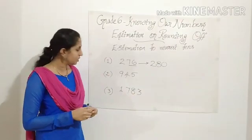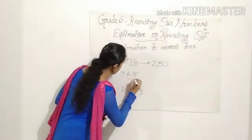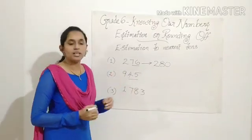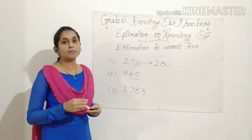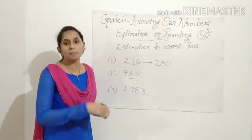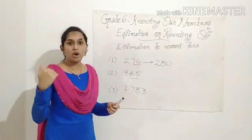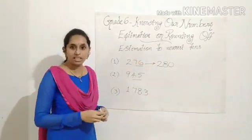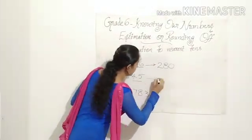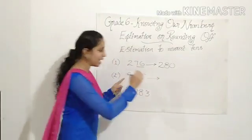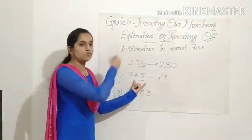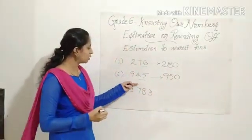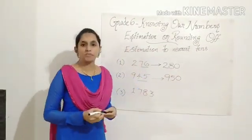Let's check the next example: 945. The last two digits are 45. 45 lies between 40 and 50, and you know that 45 is estimated to 50. So I write the 9 as it is and change 45 to 50. The answer is 945 is estimated to 950.